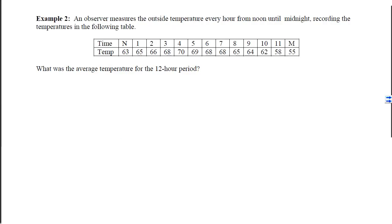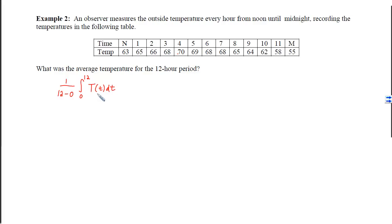In Example 2, we are given information about an outside temperature function — not analytically, just as a table of data — and we're asked for the average temperature for the 12-hour period. Since we see the word 'average,' that means we write 1 over b minus a times the integral from a to b. Our b is 12 and our a is 0, so we have the average with the temperature function inside the integral. Since we can't find an antiderivative, we have to estimate the accumulation, which is why we use the trapezoidal rule.